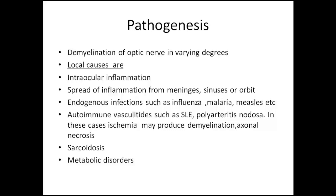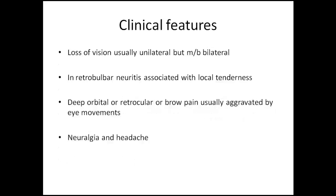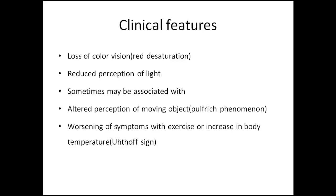Coming to the clinical features: it is usually unilateral but could be bilateral. In retrobulbar neuritis, it is usually associated with local tenderness — it could be deep orbital, retroocular, or brow pain, usually aggravated by eye movements. This is because the optic nerve is close to the insertion of the extraocular muscles at the annulus of Zinn. There could also be neuralgia and loss of vision, especially color vision — the color vision most affected is red desaturation.